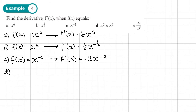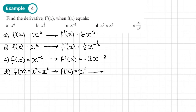Part d: f of x equals x squared times x cubed. The first thing is to simplify it: x squared times x cubed becomes x to the power 5. Then find the derivative. The power 5 comes to the front, giving 5x to the power 5 minus 1, so f dash of x equals 5x to the power 4.